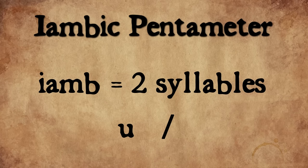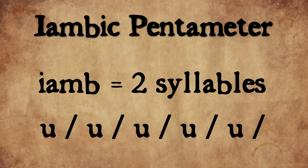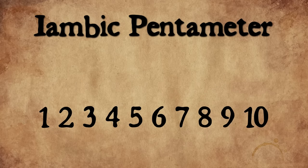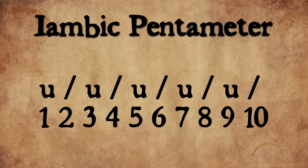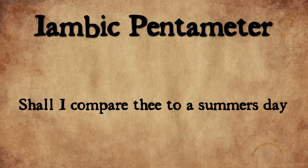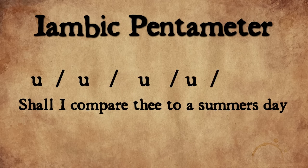Quite simply, iambic pentameter is a measure of verse. An iamb is two syllables — an unstressed sound followed by a stressed sound. Pentameter simply means there are five of those. So each line of a Shakespearean sonnet is made up of 10 syllables. If we look at Sonnet 18's first line and accentuate the stressed sound, it sounds something like: 'Shall I compare thee to a summer's day?' — da-dum, da-dum, da-dum, da-dum, da-dum.